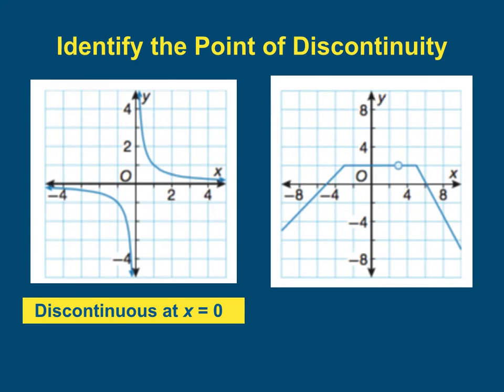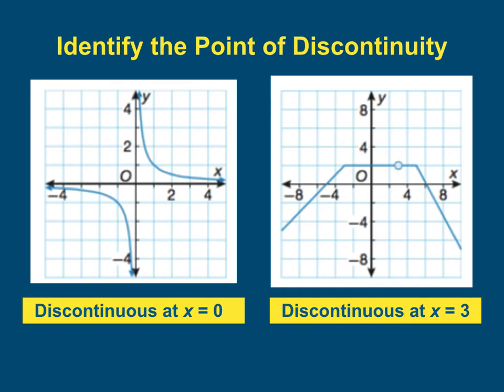In the second graph, there's only one point of discontinuity. It's at x equals 3. Notice we call the points of discontinuity by their x values.